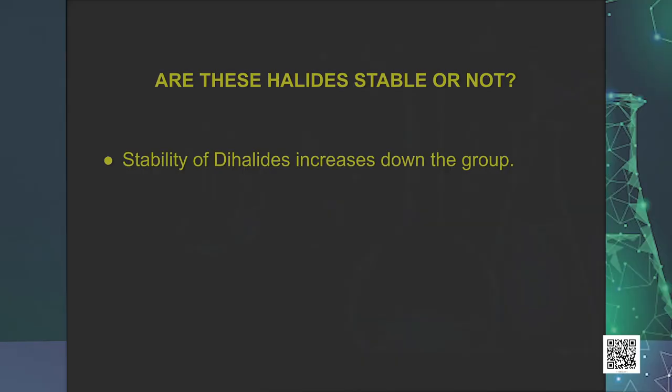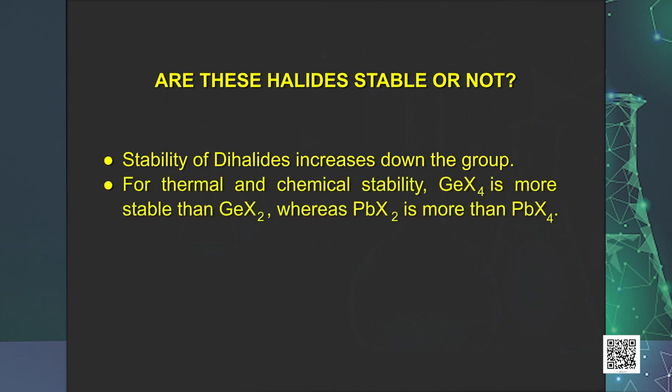The stability of dihalides increases down the group. Considering thermal and chemical stability, GeX4 is more stable than GeX2, whereas PbX2 is more stable than PbX4. Except for carbon tetrachloride, other tetrachlorides are easily hydrolyzed by water, because the central atom can accommodate the lone pair of electrons from the oxygen atom of a water molecule in its d orbital.